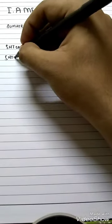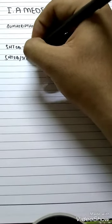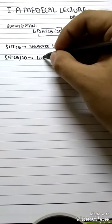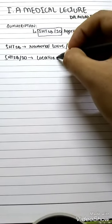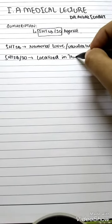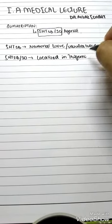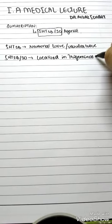Guys, 5-HT 1b and 1d is located in the trigeminal ganglia.